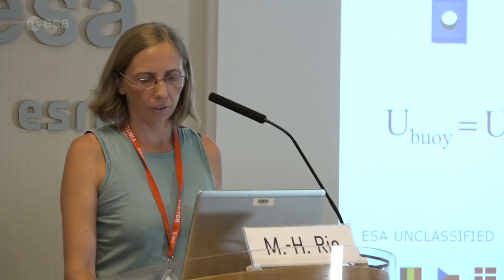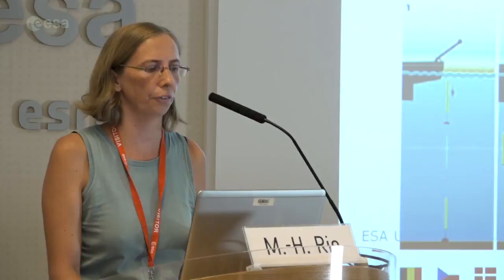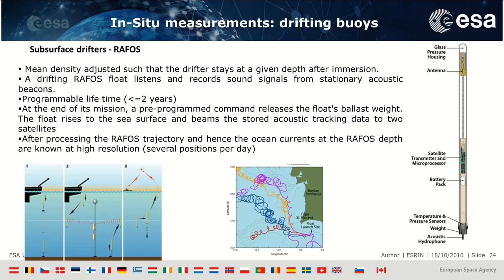You also have drifting buoys designed for measuring currents at depth — the RAFOS subsurface drifters. Their mean density is adjusted to stay at a given depth. They work by listening to and recording sound signals from stationary acoustic beacons, with a programmable lifetime of less than two years. At mission end, a pre-programmed command releases the float's ballast weight, it rises to the surface and transmits its stored acoustic tracking data to satellite, providing ocean currents at depth at very high resolution with several positions per day.